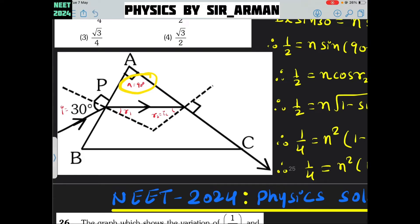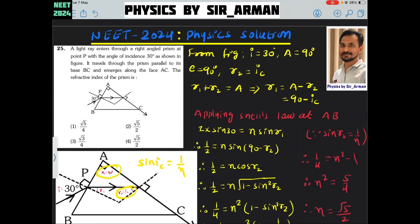Here A is 90 and we know that whenever the light moves parallel to the surface, whenever r is 90 for these two surfaces, this is the angle of refraction. The incident angle is nothing but the critical angle. Here r2 angle is critical angle and for critical angle we can write sin ic equals 1 by refractive index. From figure, i equals 30, A is 90, emergent is 90, and r2 is our critical angle.